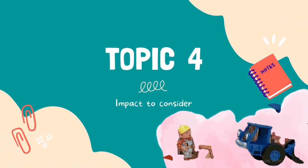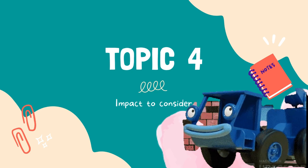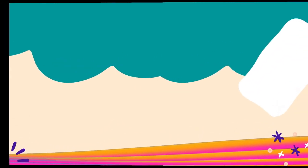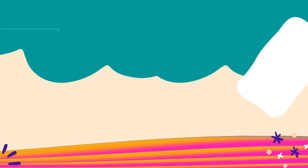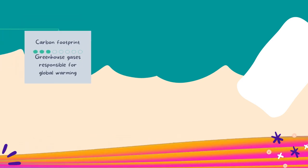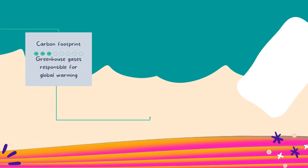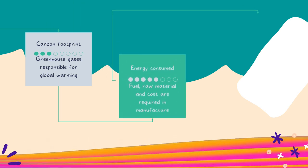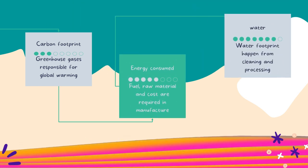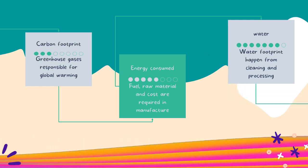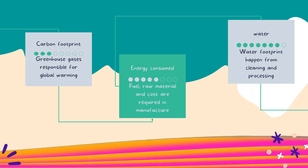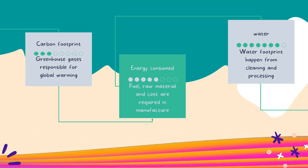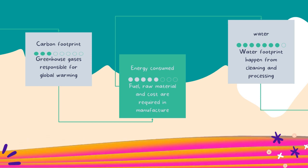We also need to look at the impacts to consider. The first impact is carbon footprint. This impact produces greenhouse gases that are responsible for global warming. Second is energy consumed — it involves use of fuel and raw materials that produce a large amount of emissions, and requires cost for manufacture. Lastly is water. Water can cause a water footprint that occurs from cleaning and processing.